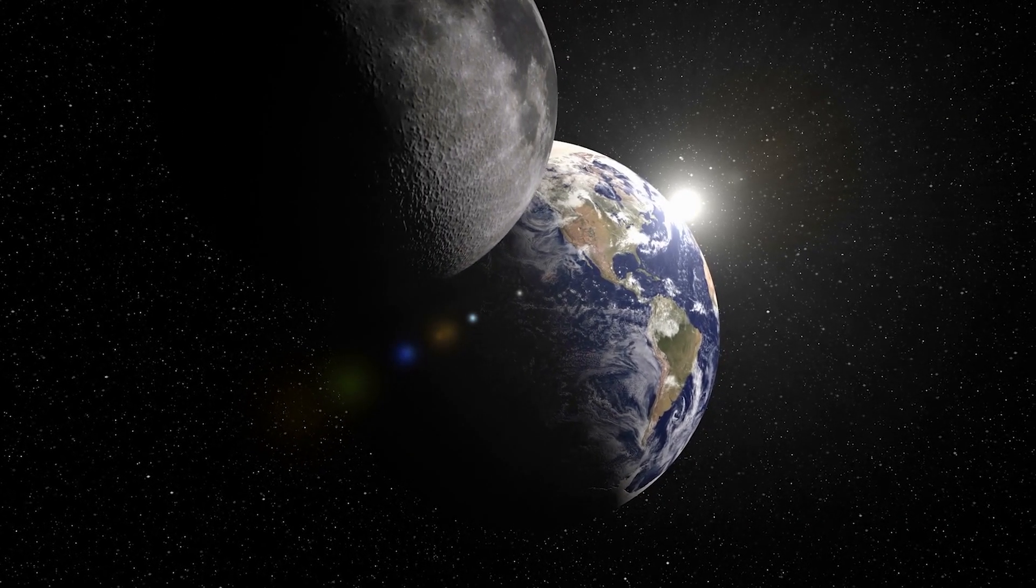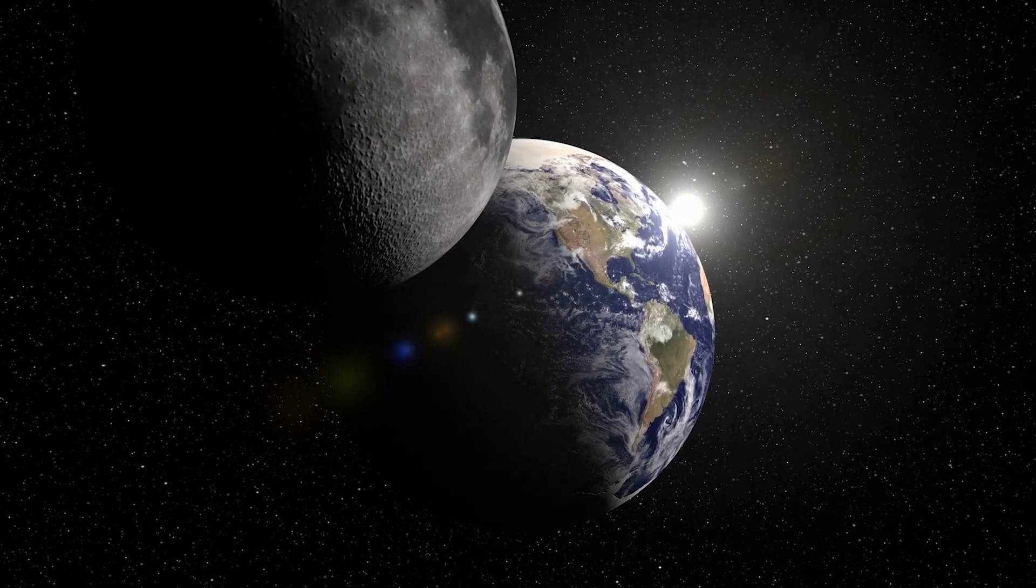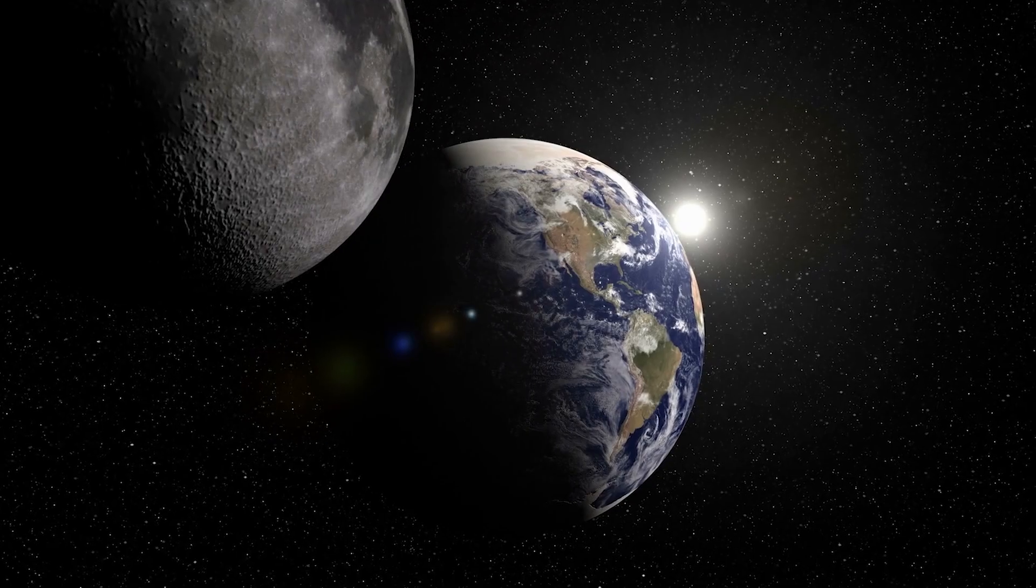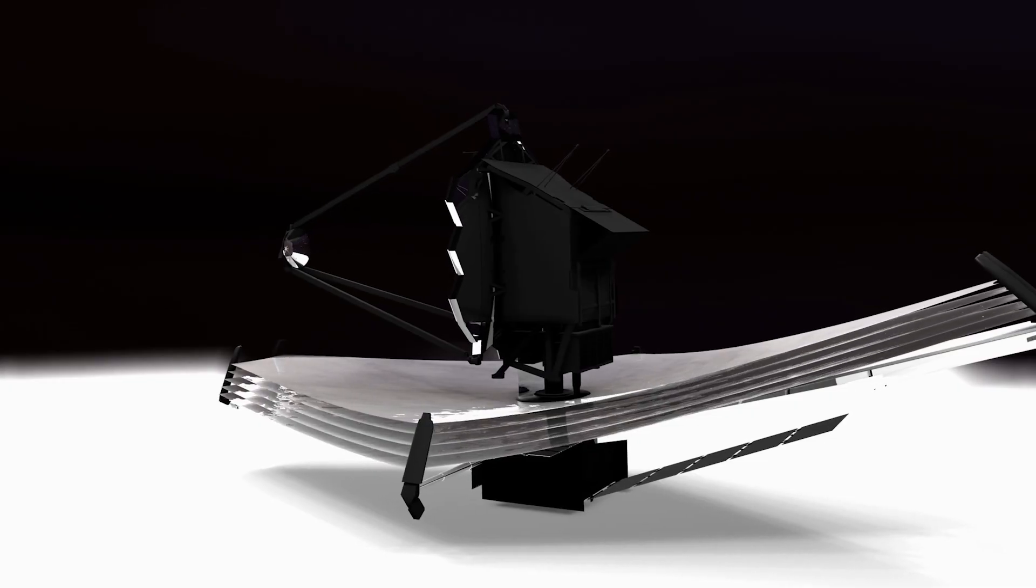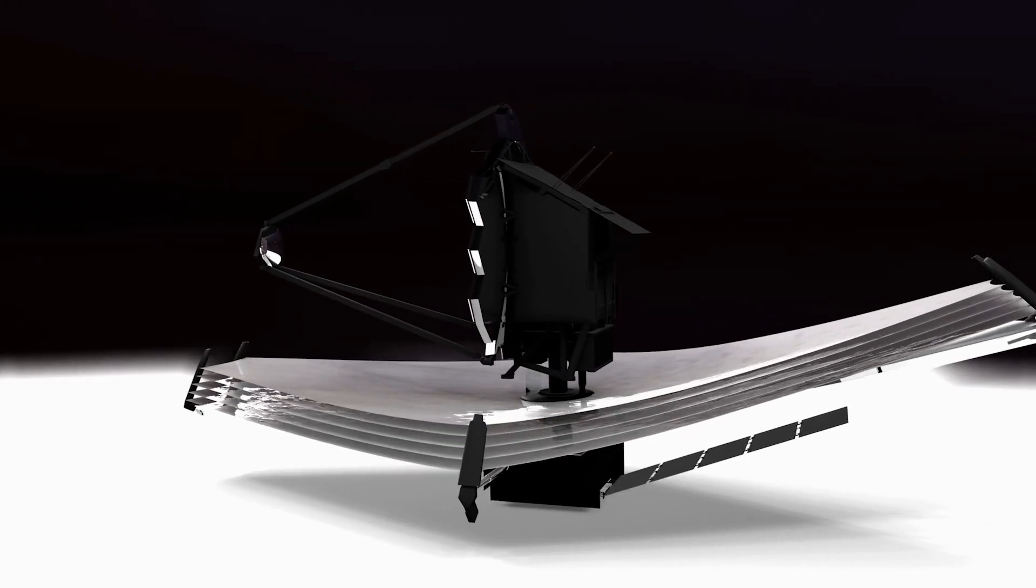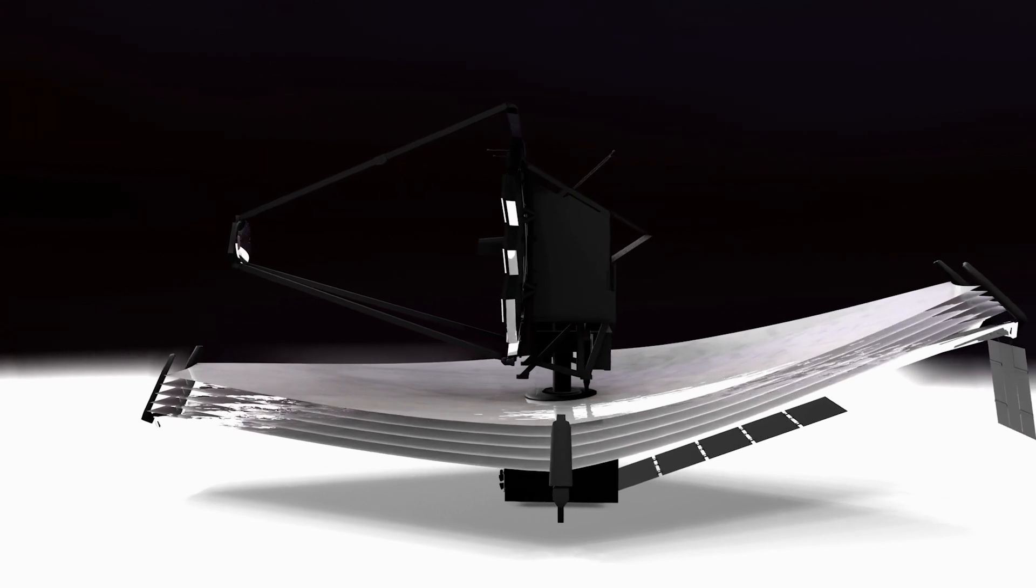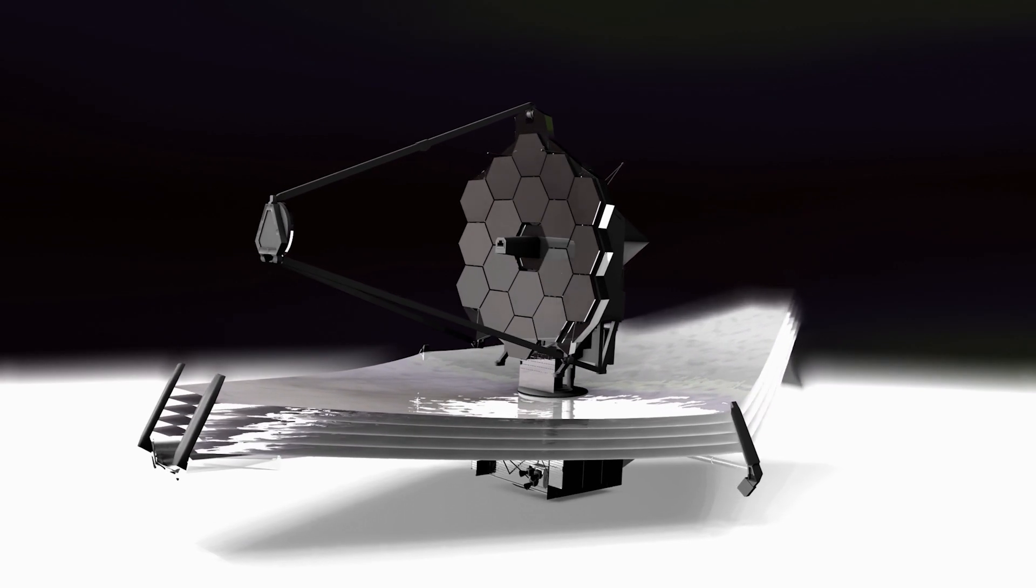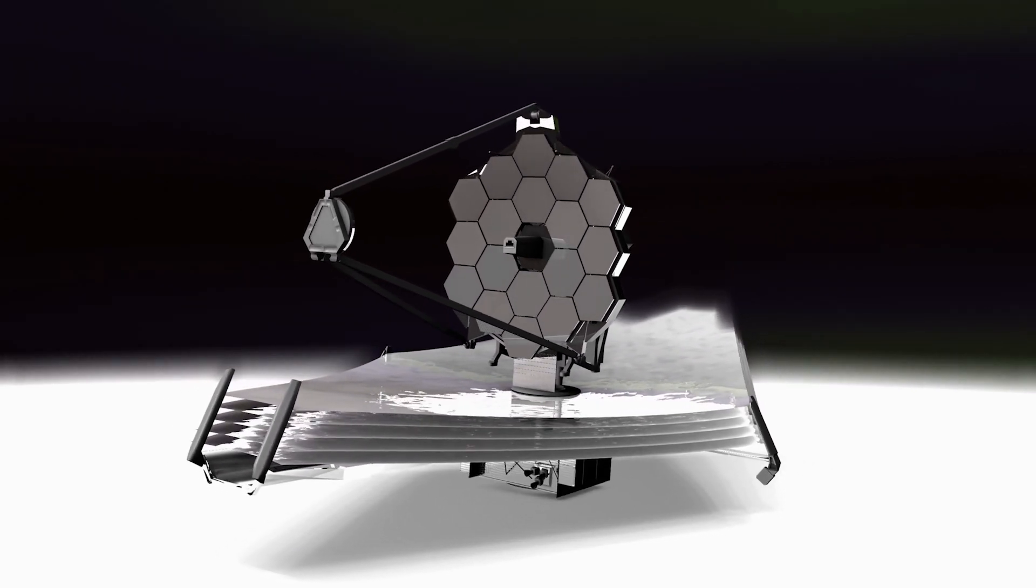The sun shield is designed to be folded 12 times in order to fit within the rocket's payload fairing, which is about four and a half meters or 15 feet in diameter. Once the telescope blasts off on the rocket into space and reaches its destination, it will unfold to about 14 by 21 meters, 46 by 70 feet.